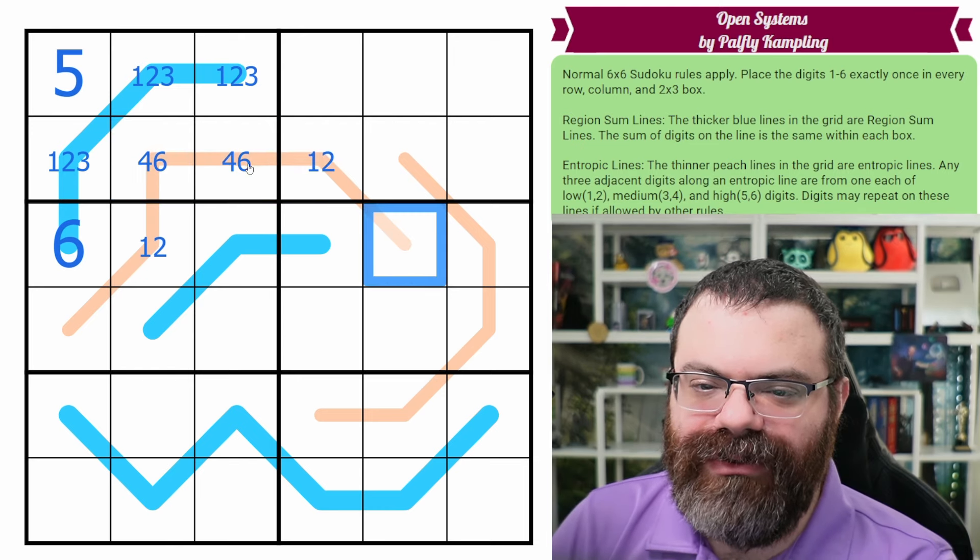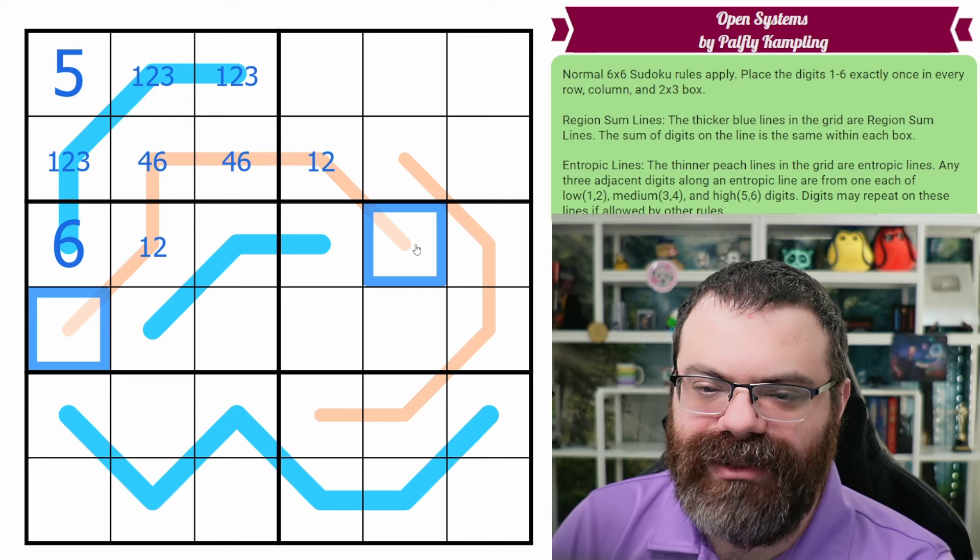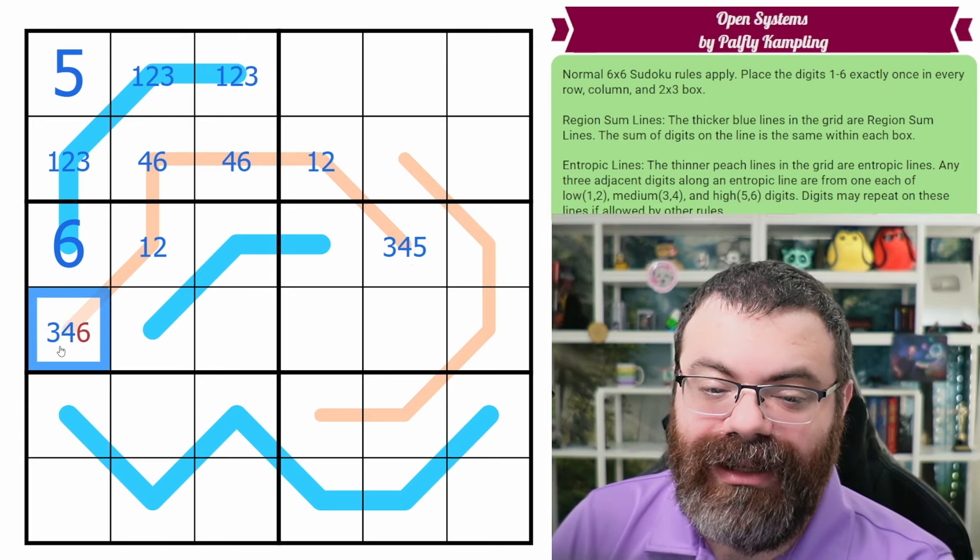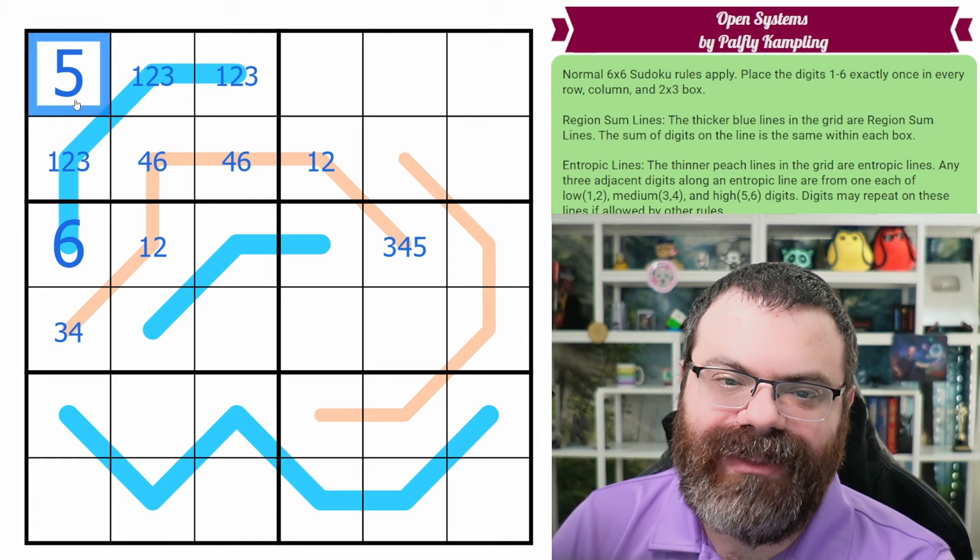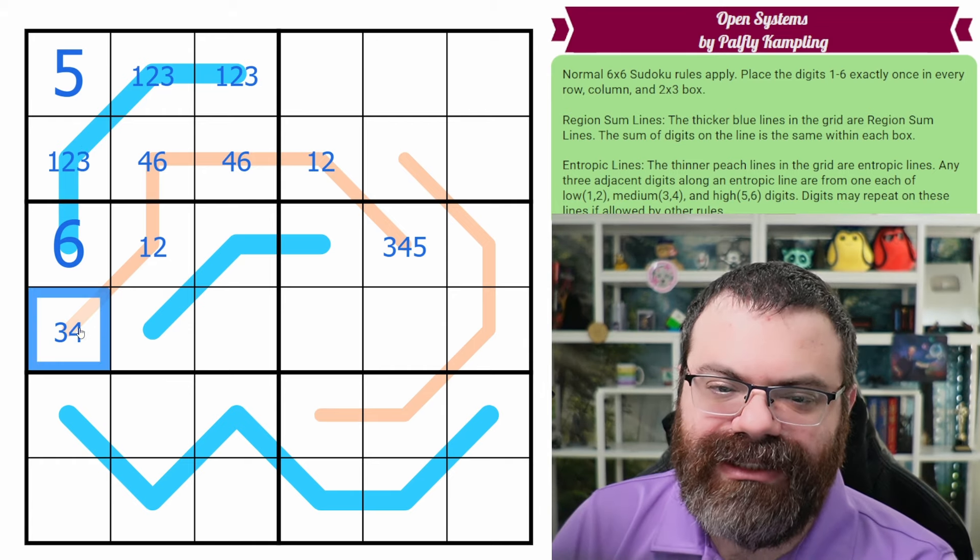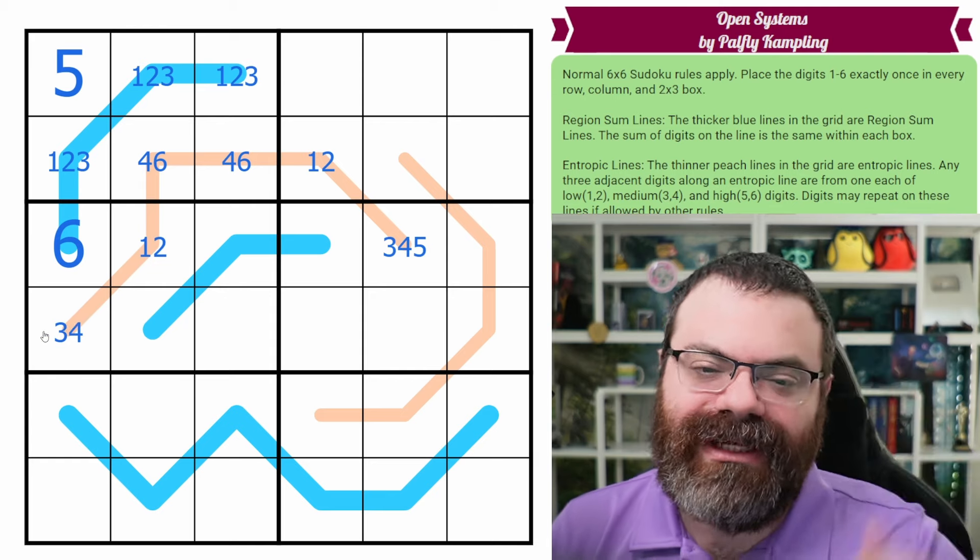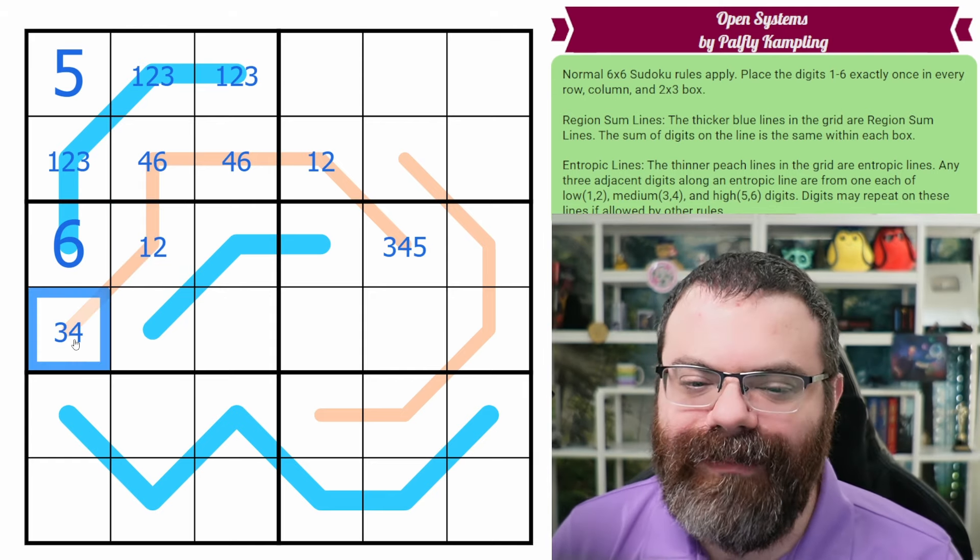Now we don't know whether this is going to be medium or high, but we know both of these are not low. So I'm actually going to write 3, 4, 5, 6 here. So this will resolve it because this couldn't be the 5 or 6. So this is a mid, and our medium. I say mid sometimes, I don't know which one's better. Mid is easier to say.